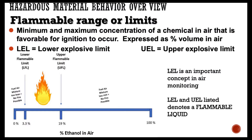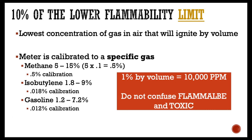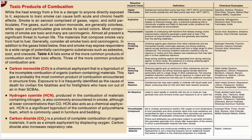Even though flammability limits were covered in a previous module, they can't be reviewed too many times. We have a lower flammability limit and upper flammability limit. We set our explosive gas meter to 10% of the lower flammability limit. Always remember: 1% by volume equals 10,000 parts per million. Flammability does not always equal toxicity — usually something is toxic before it's flammable, but not always. We must calibrate our meter to a specific gas and a specific limit so when the alarm goes off, we know whether it's a flammability or toxicity alarm.